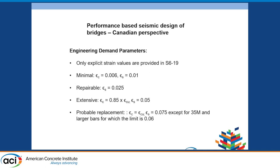For the repairable damage state we're at a steel strain of 0.025. For extensive damage, this is where the core concrete comes in — you're allowed to go to 85% of the Mander confined concrete model. AASHTO has 1.4 times that, but this is straight up to the Mander confined capacity. For steel we're allowing up to 0.05. For probable replacement, we allow all the way up to the Mander confined concrete strain for the core, which comes straight out of the Caltrans criteria. The 0.075 value for steel applies, except for 35M and larger bars, for which we have a lower limit.